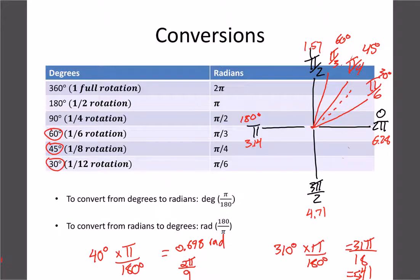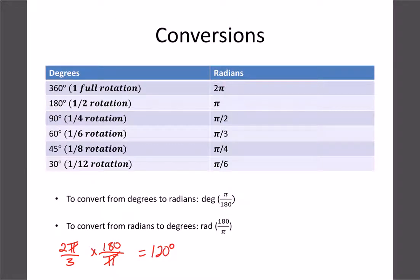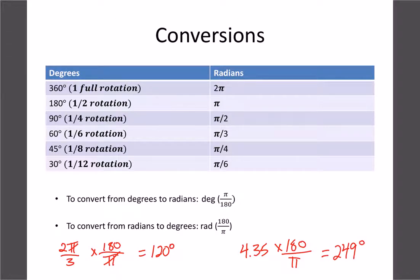To convert radians back to degrees, do the opposite: multiply by 180 and divide by π. For 2π/3, the π's cancel and we get 2 × 180 ÷ 3 = 120 degrees. For a decimal like 4.35 radians, multiply by 180 and divide by π (since there's no π to cancel), giving approximately 249 degrees.